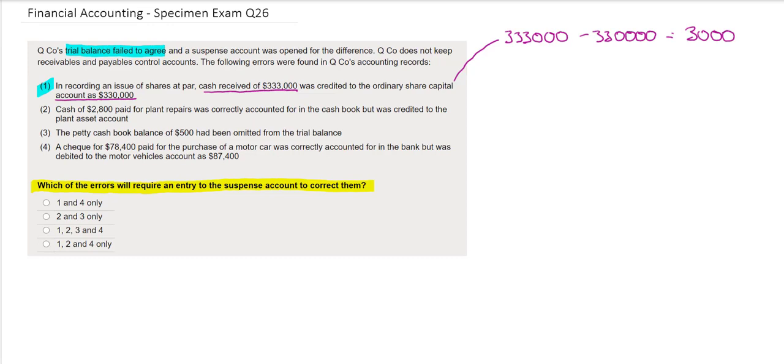The assumption is that the debit side of this transaction was recorded correctly and so there was a debit to cash for $333,000 and then just the credit to the share capital. Therefore to correct this we need to make the share capital balance bigger. To increase our share capital balance we will need to credit share capital with the $3,000 and the other side of this transaction will go to the suspense account.